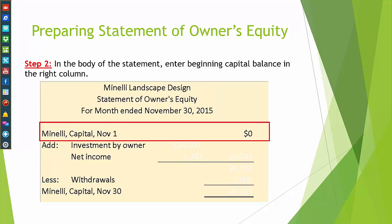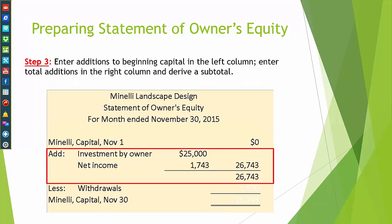Step 2: we're going to enter beginning capital on November 1st in the right column. Since this is the first month of operation for Minnelli Landscape Design, the beginning capital is $0. Step 3: we're going to enter additions to beginning capital in the left column. There are two additions: investment by owner, $25,000, and net income, which we picked up from the income statement of $1,743.